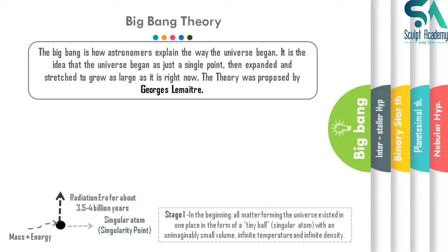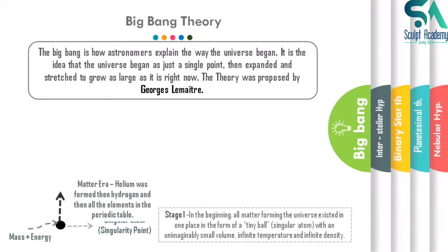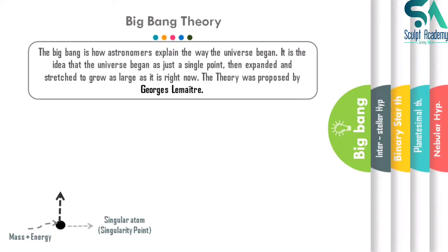After the explosion, for a period of around 3.5 to 4 billion years, there were radiations all around space. Radiation consists of fast-moving neutrons, electrons, and protons — gamma, alpha, and beta radiations. These fast-moving particles somehow got stabilized and started the formation of the first matter, known as helium and hydrogen. First helium developed, and then hydrogen developed from it.